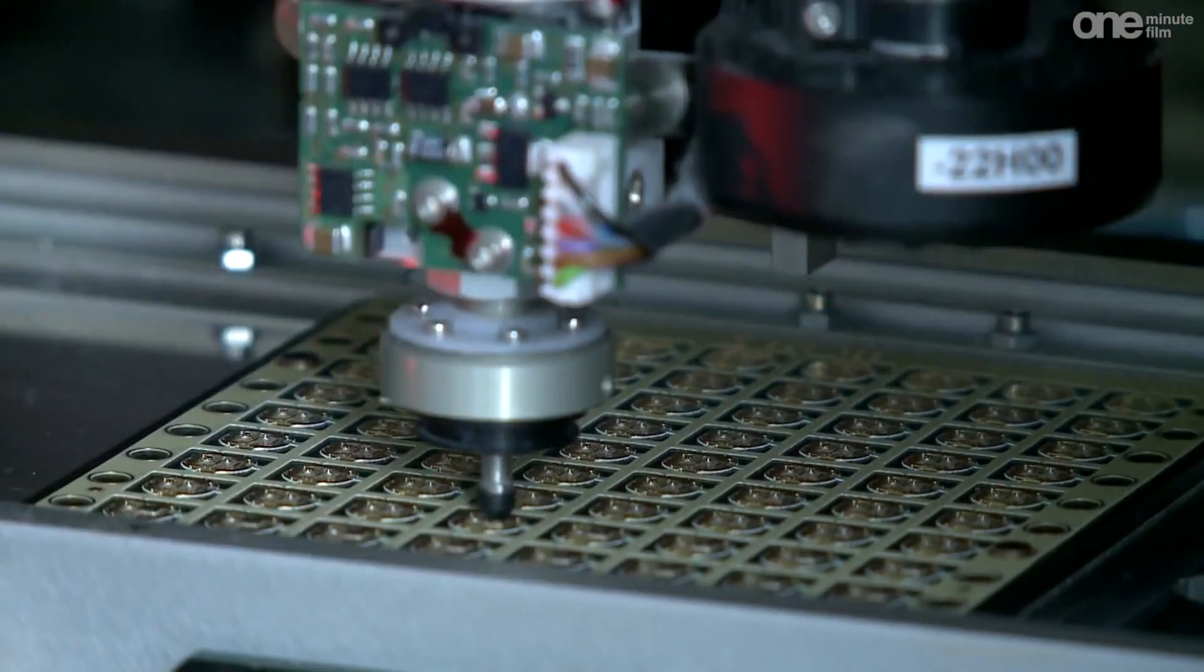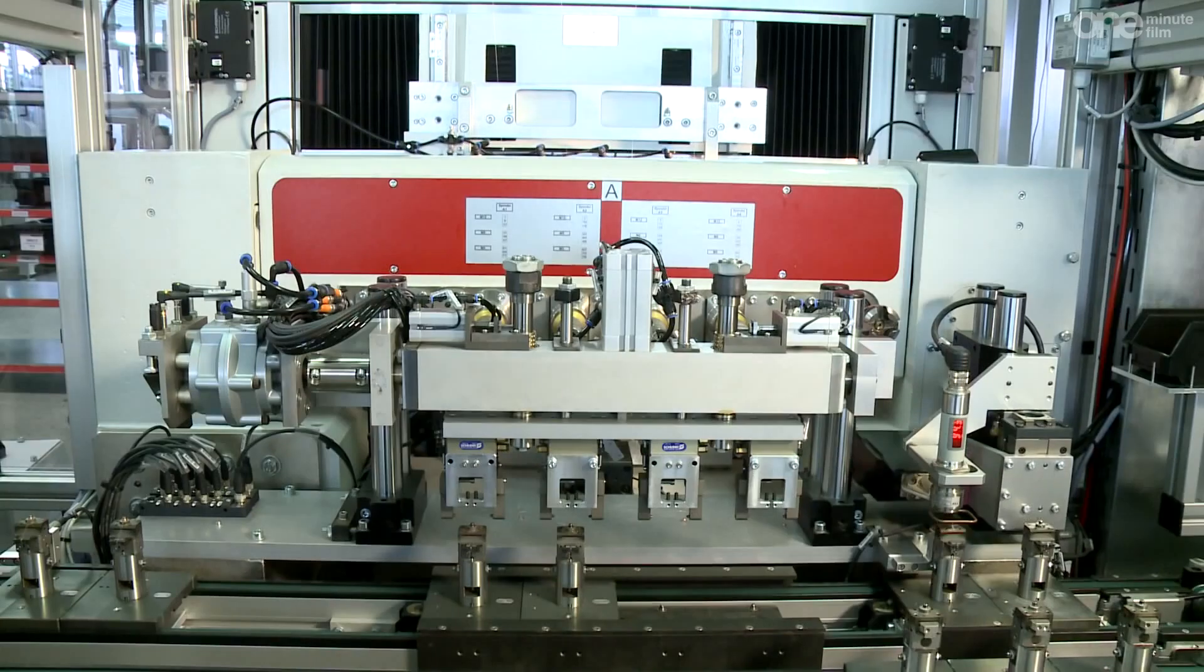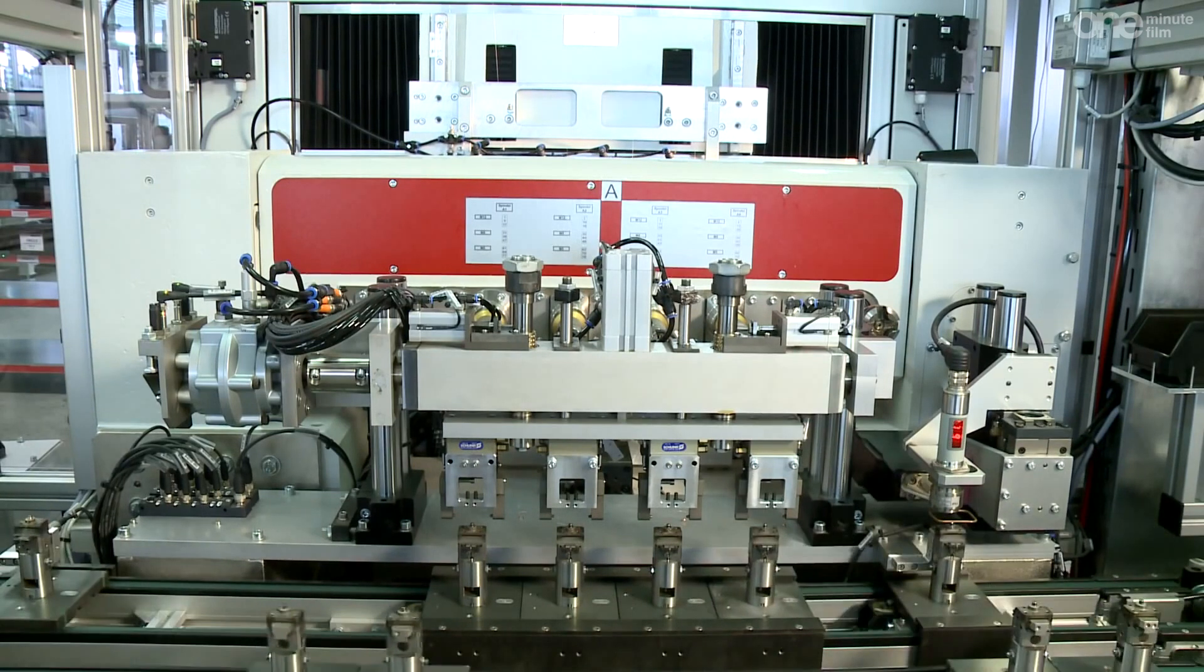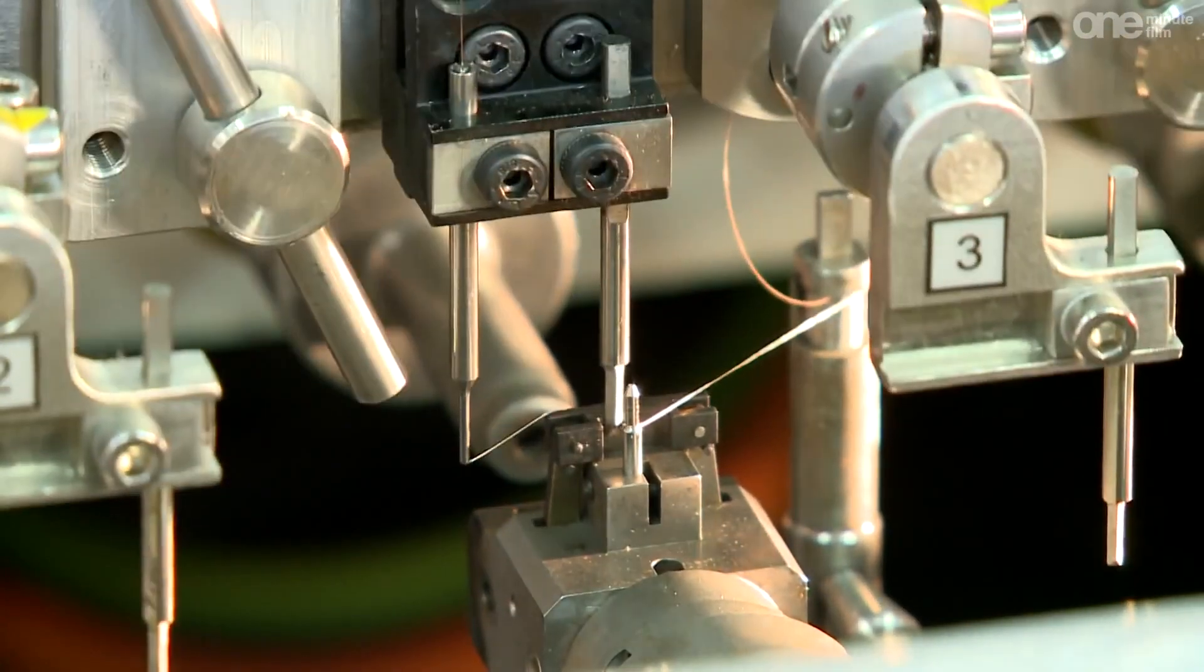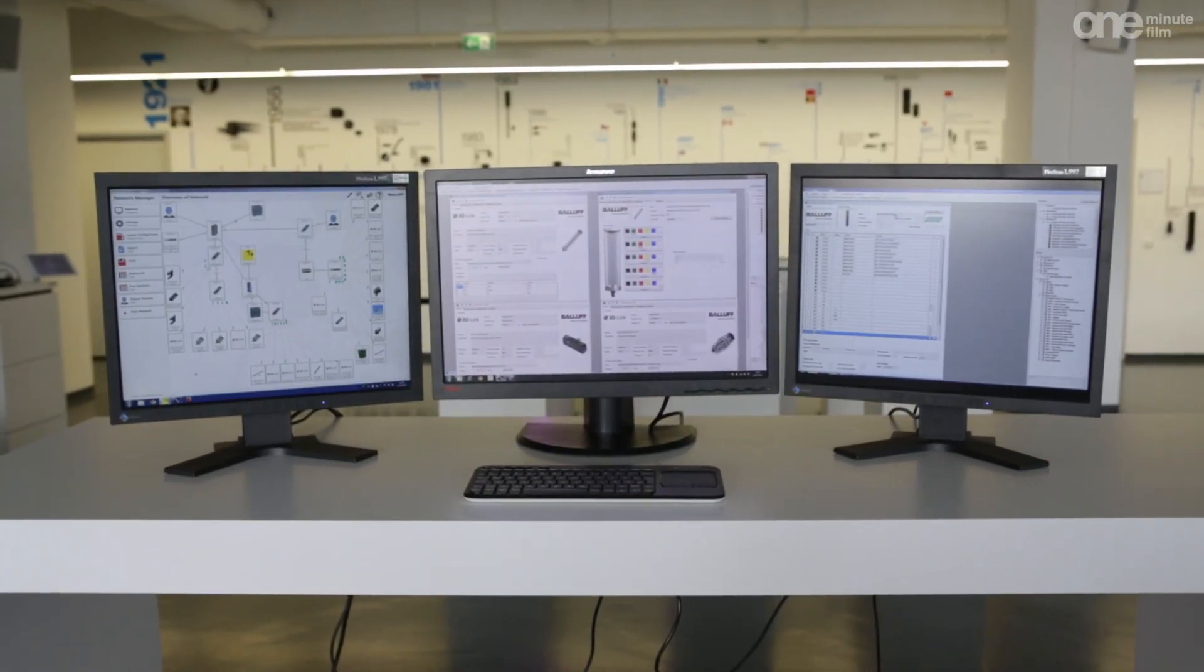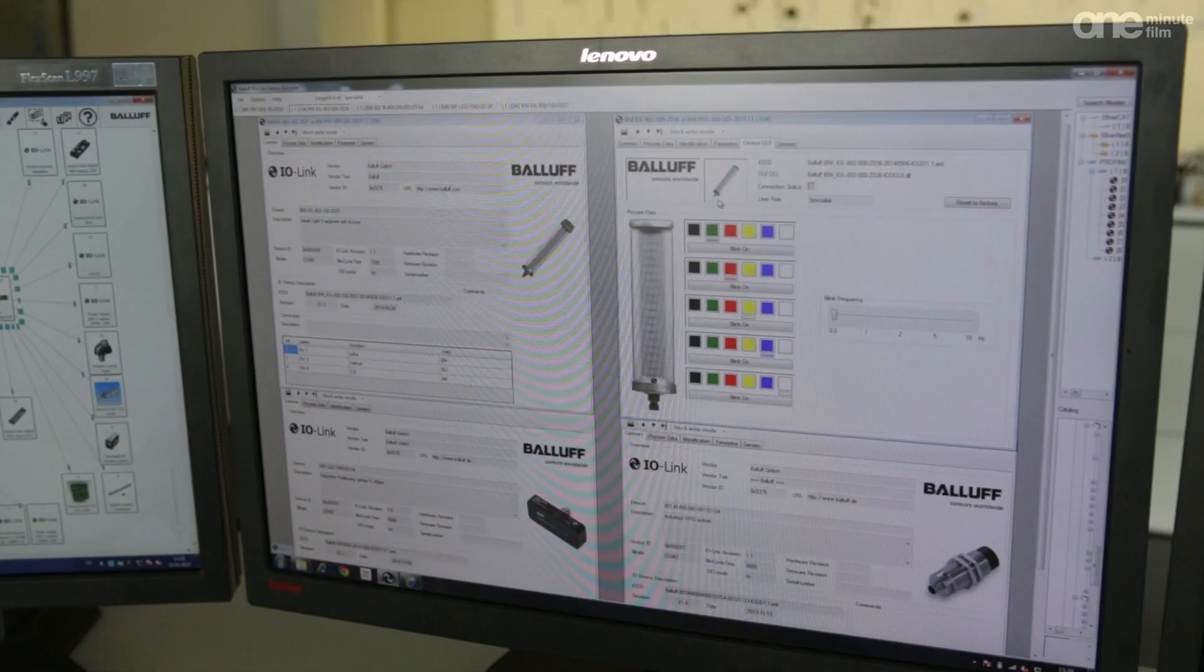Achieving individualization through a lot size of 1, IO-Link enables flexibility, re-parameterization during ongoing operations, increased efficiency, and a boost in overall equipment effectiveness. Sensors provide intelligent communication functionalities to autonomous cyber-physical systems arranged in networks.